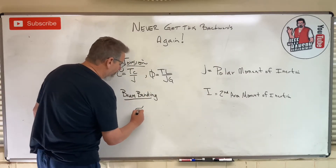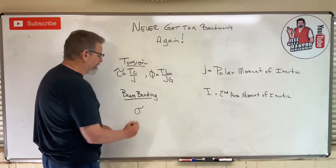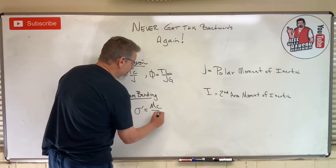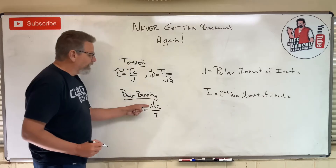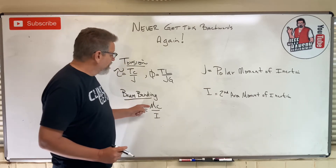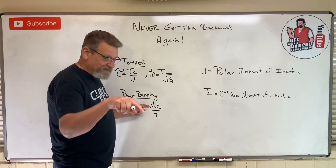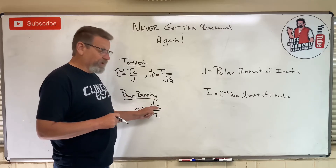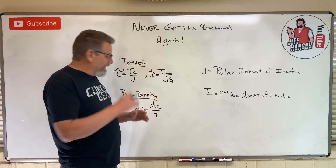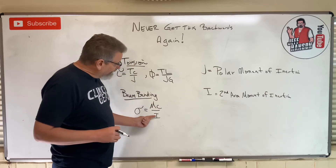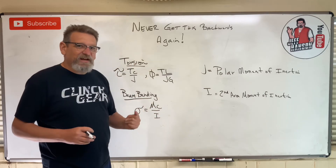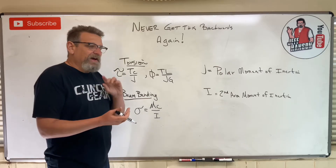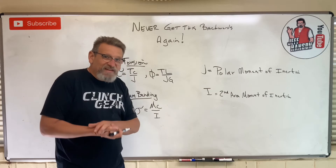The central equation for this chapter is the flexure formula: sigma equals Mc over I. M is the bending moment taken from the shear-moment diagram, c is the distance from the neutral axis of the beam to the outer fibers, and I is the second area moment of inertia.